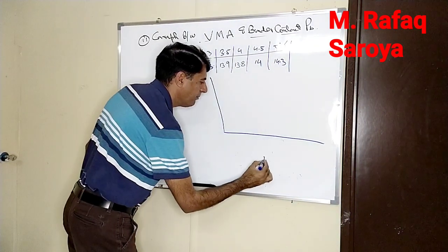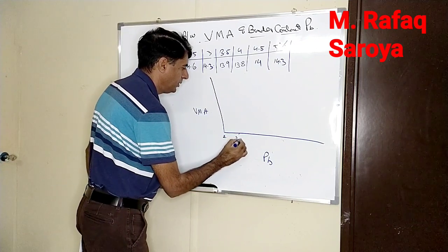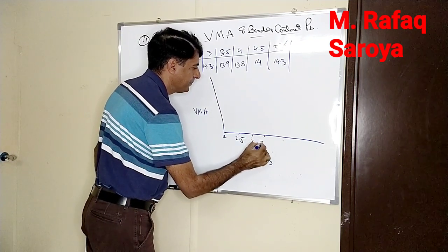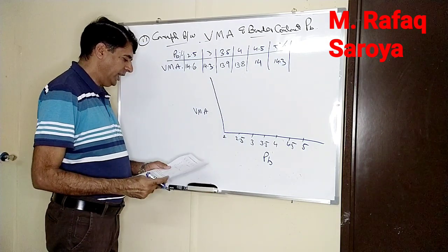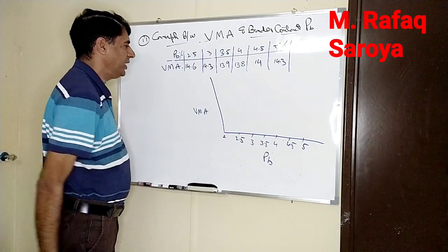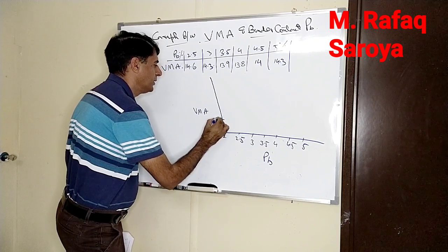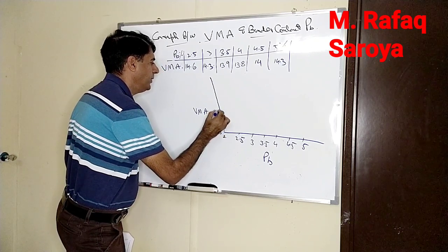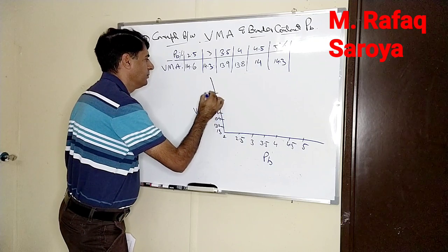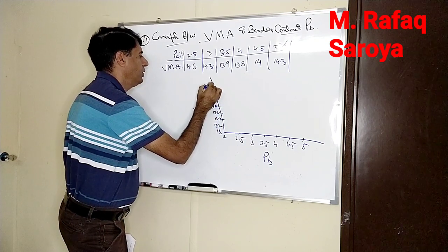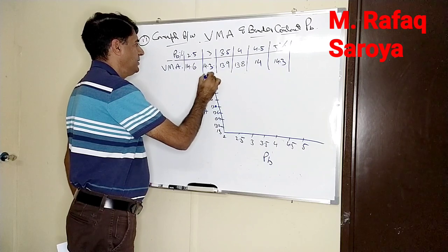PB and then VMA. Along the x-axis: 2, 2.5, 3, 3.5, 4, 4.5, and 5. The value is taken over here. Now we will come along the y-axis: 13, 13.2, 13.4, 13.6, 13.8, 14, 14.2, 14.4, 14.6, and 14.8. This is the amount of VMA taken along the y-axis and binder content along the x-axis.